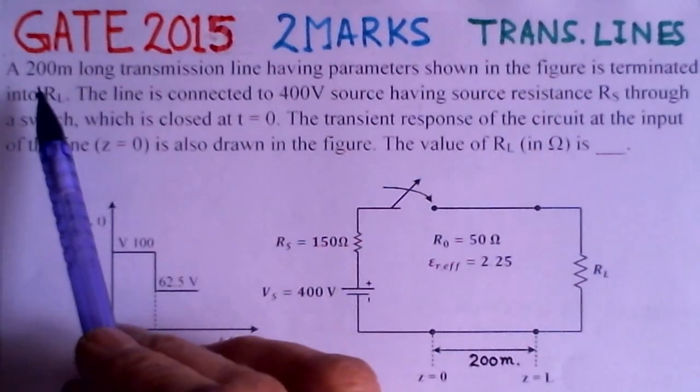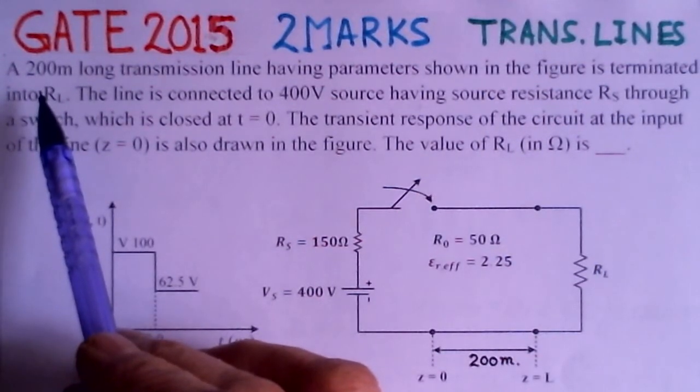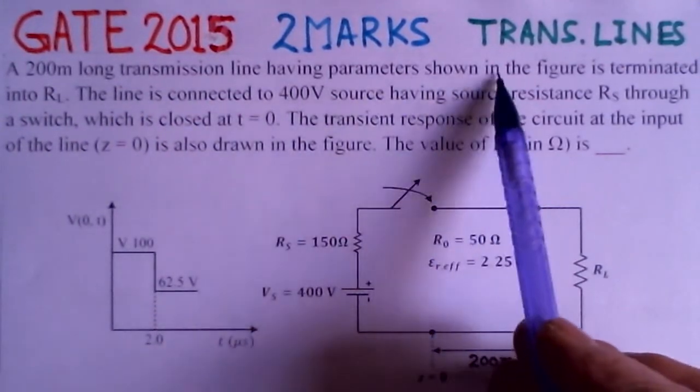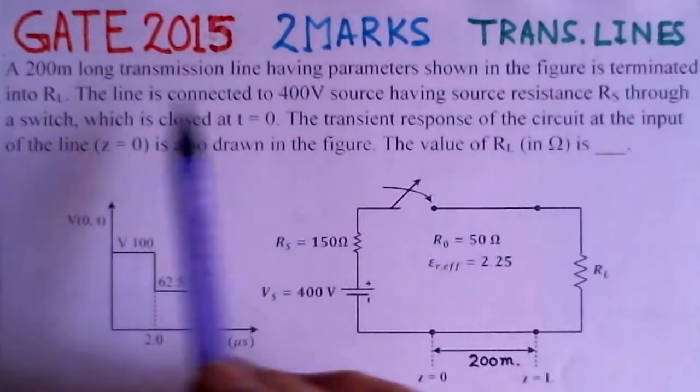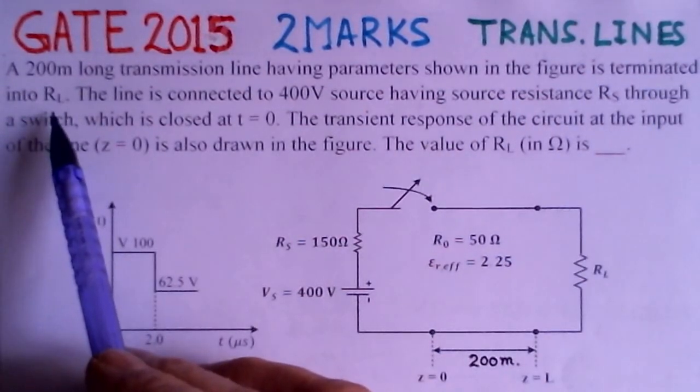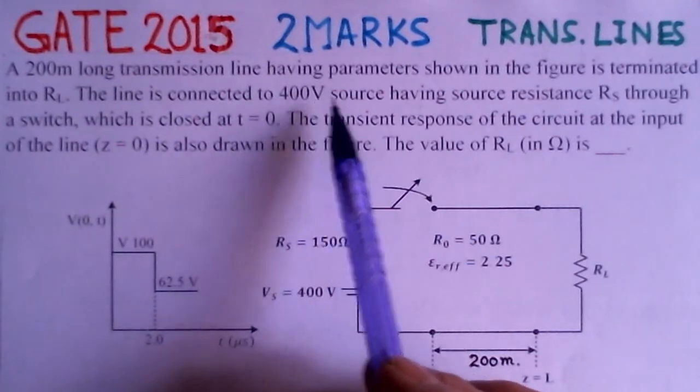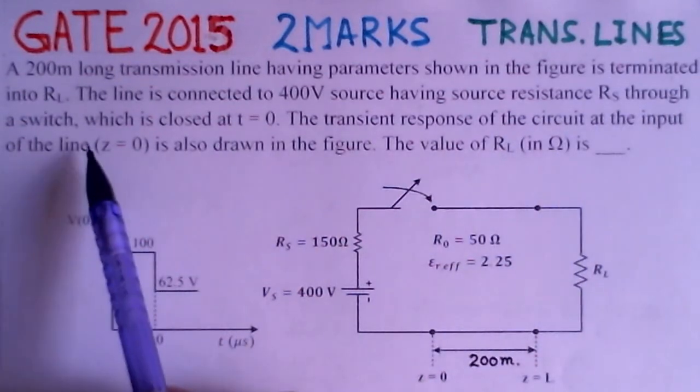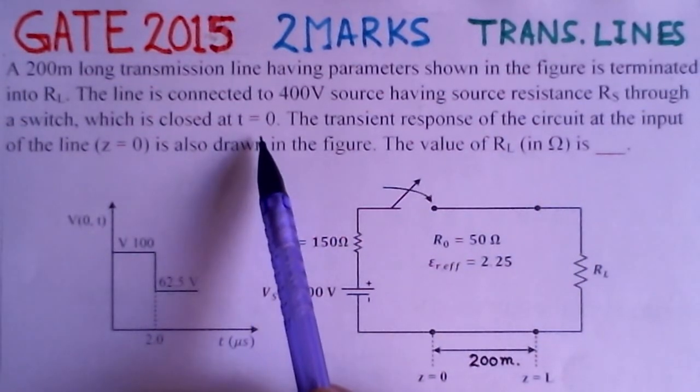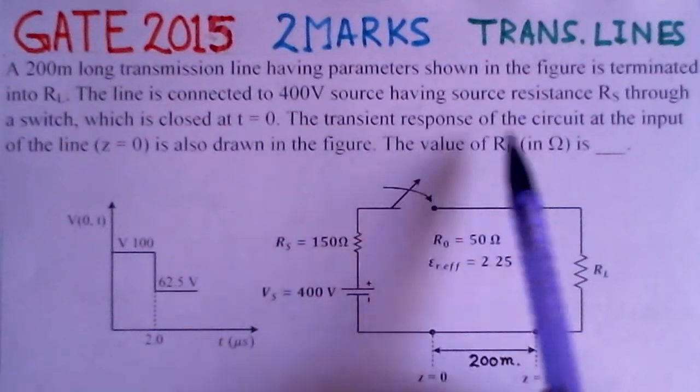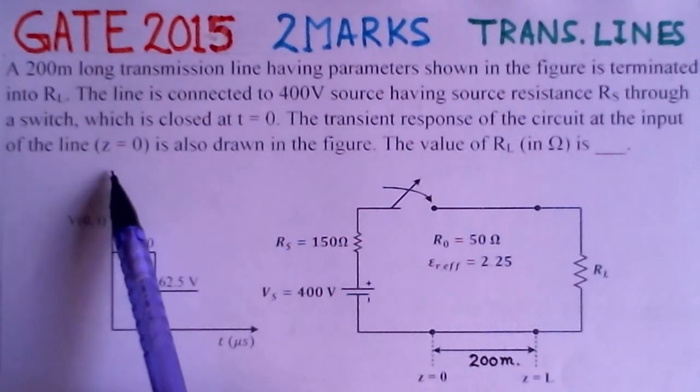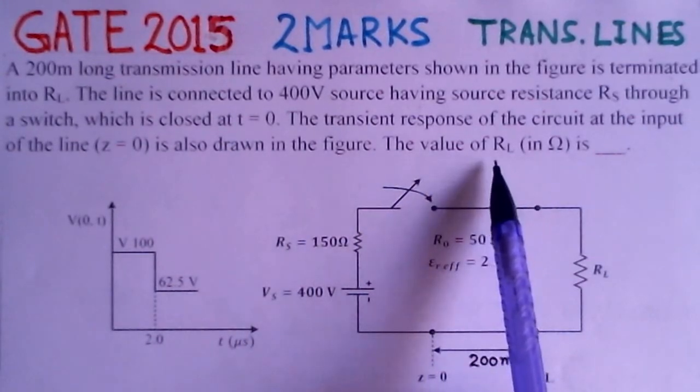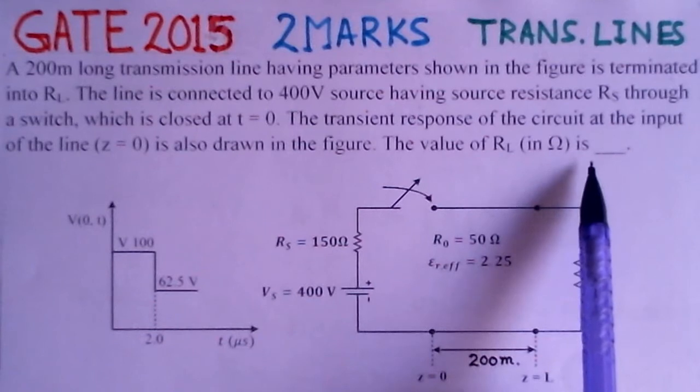First we read out the problem here. This says a 200 meter long transmission line having parameters shown in the figure is terminated into RL. The line is connected to 400V source having a source resistance RS through a switch which is closed at T equals to zero. The transient response of the circuit at the input of the line that Z is zero is also drawn in the figure. The value of RL in ohms is to be determined.